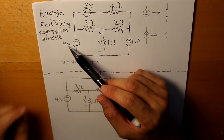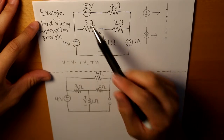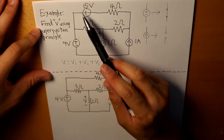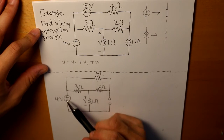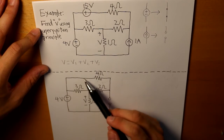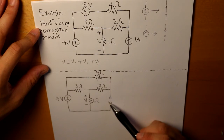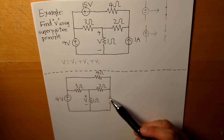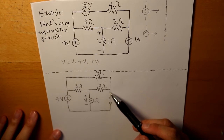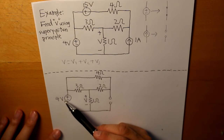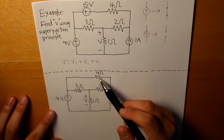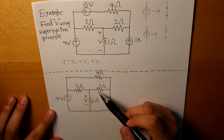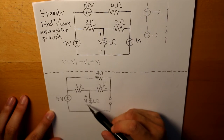Let's do the 4-volt source first. We turn off all independent sources — the 15-volt source and the 1-amp current source — and keep the 4-volt source on. The 15-volt source is short-circuited, so there's a wire in its place, and the current source branch becomes an open circuit, so that branch is removed. We're left with the 4-volt source, and we can combine the three remaining resistors together.